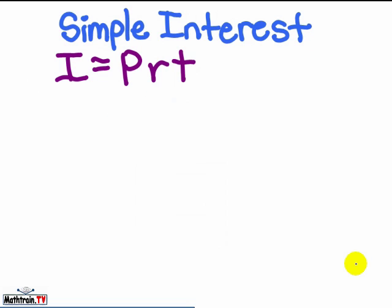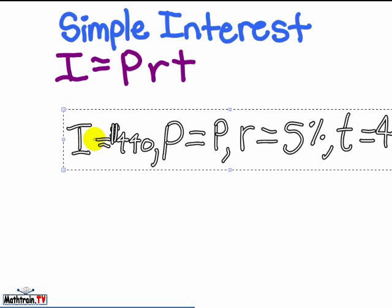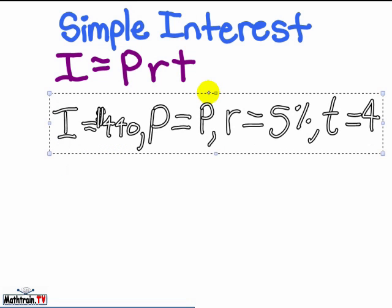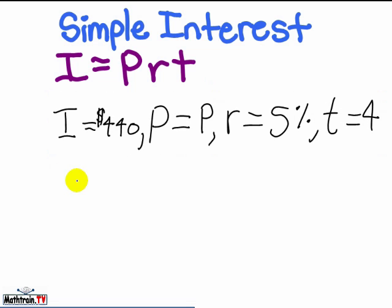So now that we have I equals PRT, now we're going to do I equals $440. P equals P, the variable. And R will equal 5%. T equals 4, 4 years.